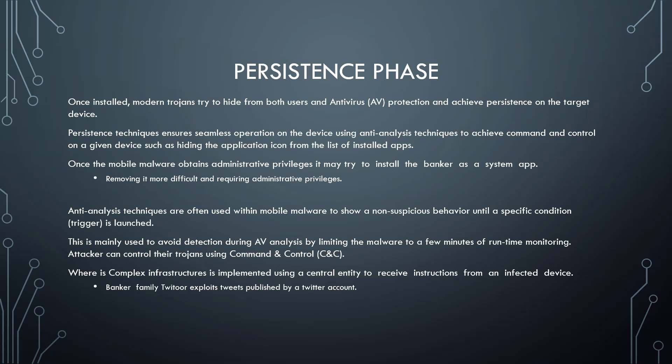In the persistence phase, once installed, modern Trojans try to hide from both users and antivirus protection and achieve persistence on the target device. Persistence techniques ensure seamless operation on the device using anti-analysis techniques to achieve command and control, such as hiding the application icon from the list of installed apps. Once the mobile malware obtains administrative privileges, it may try to install the banker as a system app, making removal more difficult and requiring administrative privileges. Anti-analysis techniques are often used to show unsuspected behavior until a specific condition is triggered, mainly to avoid detection during antivirus analysis by limiting the malware to a few minutes of runtime monitoring.